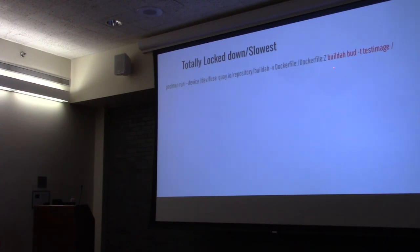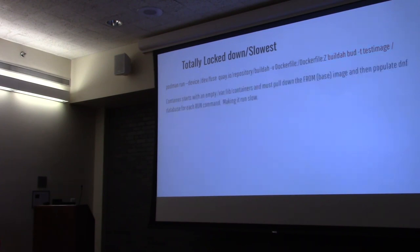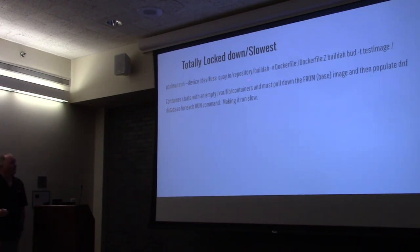Then I execute the standard build command. This works very much like 'docker build' — 'buildah bud' as opposed to 'docker build', but the rest of the syntax is essentially the same. I'm naming my image 'test-image' and pointing it at the Dockerfile I mounted from the host into the container. Container storage starts with an empty /var/lib/containers — inside this container I didn't mount anything from the host, so there's no /var/lib/containers in it.